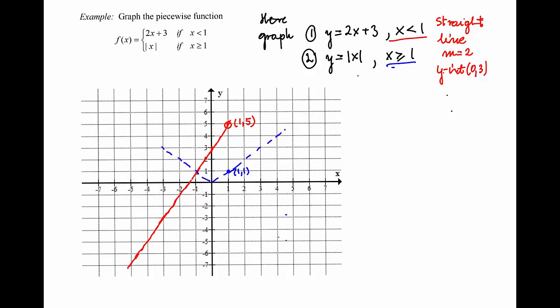We take the part of the graph that corresponds to x greater or equal to 1, which is this portion of the line. The part corresponding to x less than 1 is excluded. As a result, we get the graph of f(x) consisting of two half-lines: one that ends with an open circle, and the other part that starts with a solid dot.